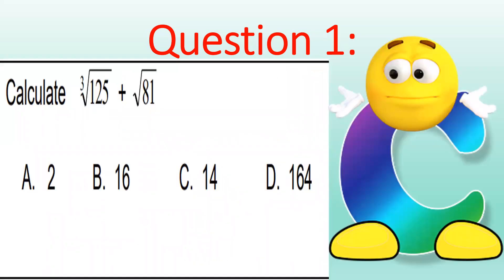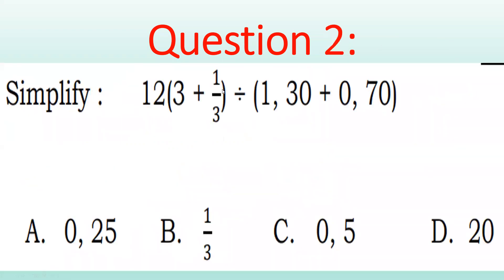Answer is C, 14 is correct. Let's continue with the next question. We have another calculation — what is 12 times (3 plus 1/3) divided by 0.70? There are decimal numbers all together. For this kind of question, step one: handle what's inside the brackets first, then multiply by 12 and divide. Let's go step by step.